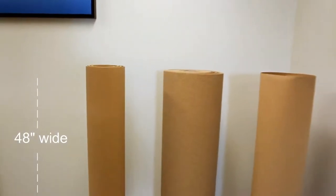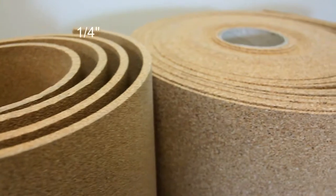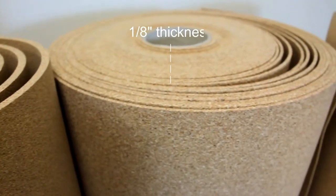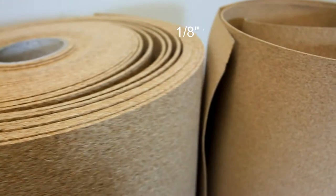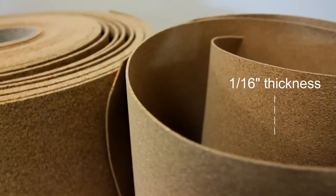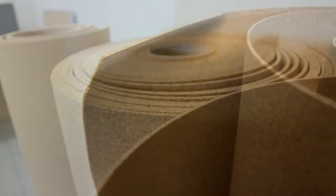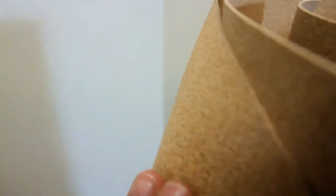Cork rolls are 48-inch wide and are available in three different thicknesses. The thinner the material, the finer the cork grain composition. Thin sheets can be molded into any shapes and act similar to fabric.